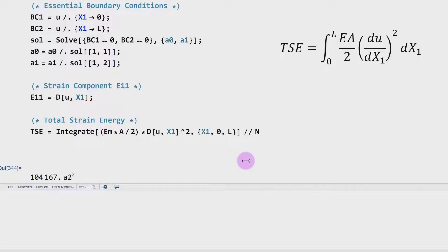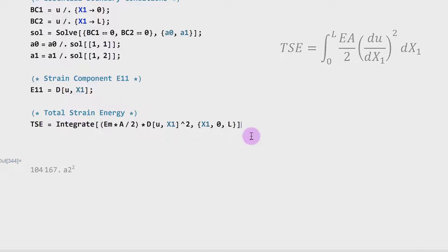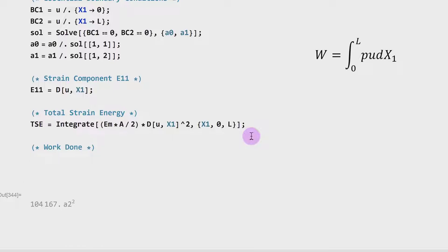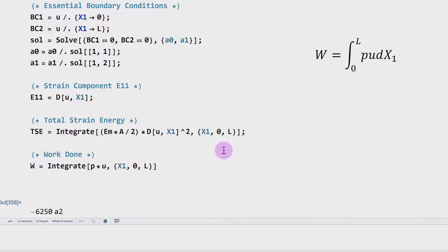Dr. Sammer knows exactly what types of mistakes you guys will make, so he puts those wrong results as possible answers on the quiz. Pay special attention to each variable you're inputting. Moving on to the work done by the external force: the work done by the distributed axial load is simply an integral of the distributed load P multiplied by the displacement function U, from x1 = 0 to L. Running this gives the total work done as -6,250·a₂.